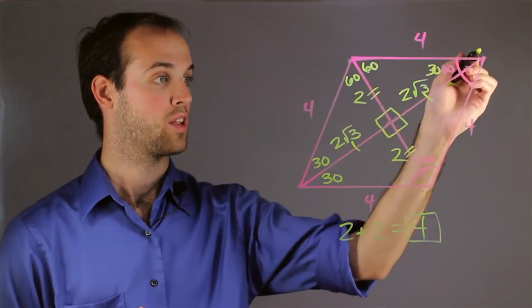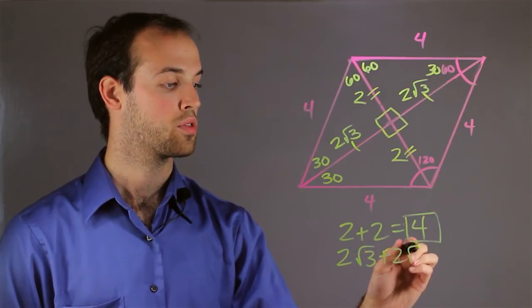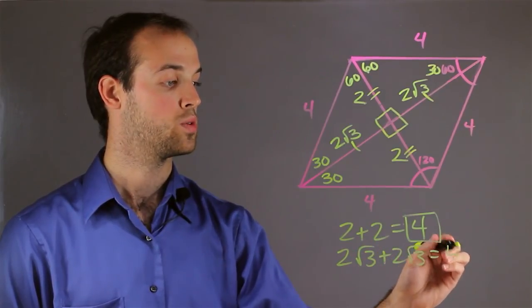So the length of the longer diagonal, then, is 2 root 3 plus 2 root 3, which is equal to 4 root 3.